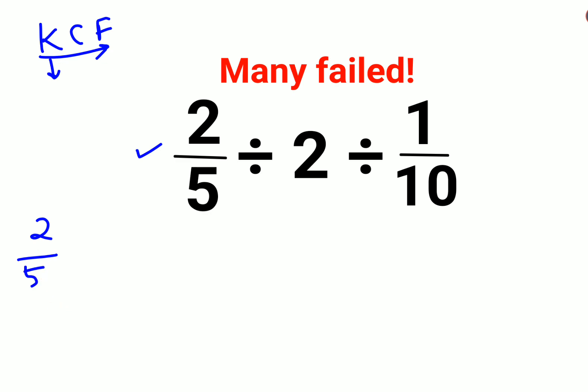So we will keep 2 upon 5 as it is. C stands for changing the division sign to multiplication. And F stands for flipping or taking the reciprocal of 2 which is 1 upon 2.